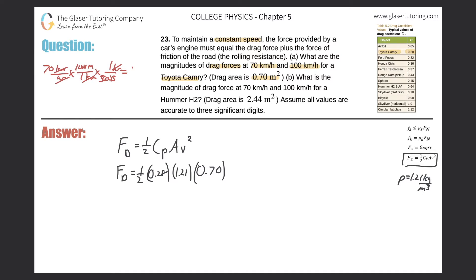This is 19.4, and that must be squared. So this is easy—just calculate the drag force: 0.5 times 0.28 times 1.21 times 0.7 times 19.4 squared. It comes out to 44.6 newtons. Okay, great. Then it asks us to do it for 100 kilometers per hour.